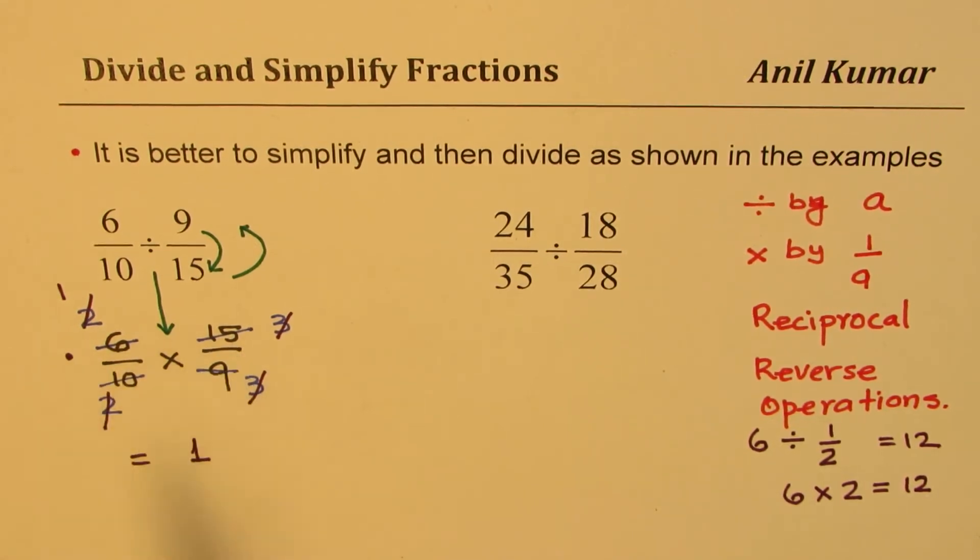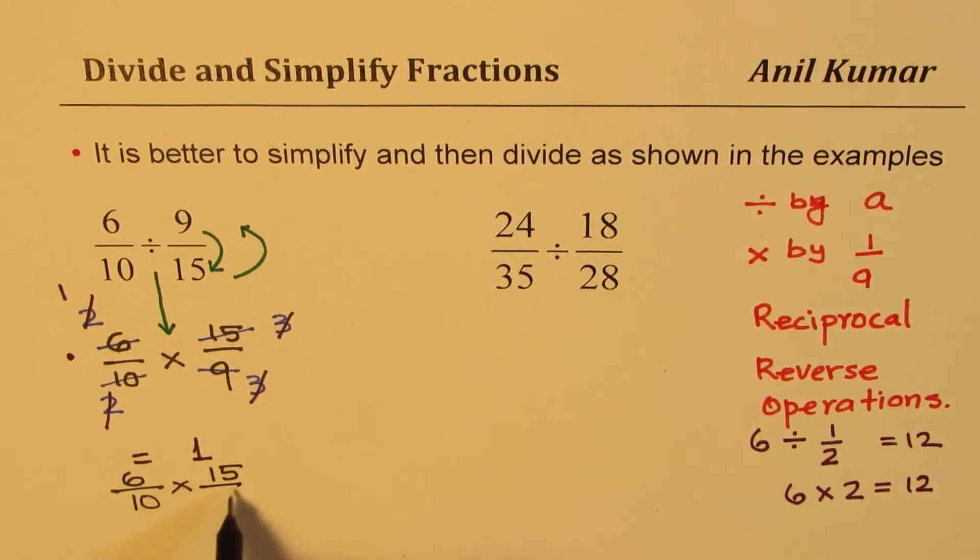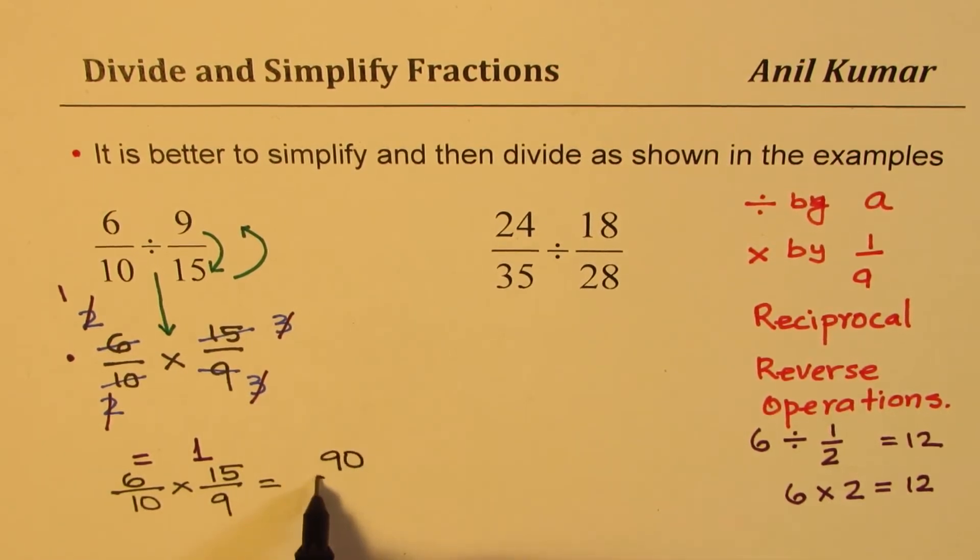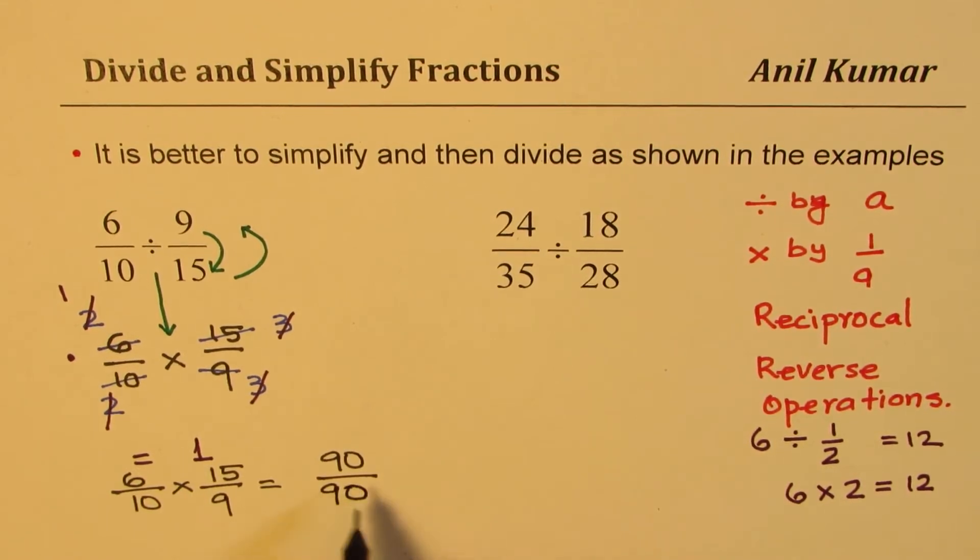Now let us check if we would have multiplied. That is to say, if I would have done something like this: 6 over 10 times 15 over 9—6 times 15 is 90 divided by 9 times 10, which is also 90.